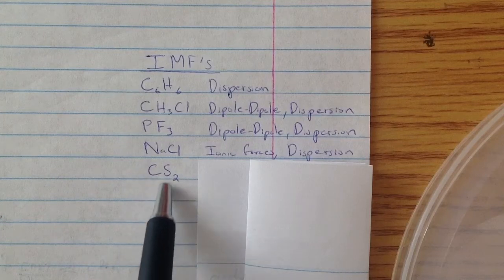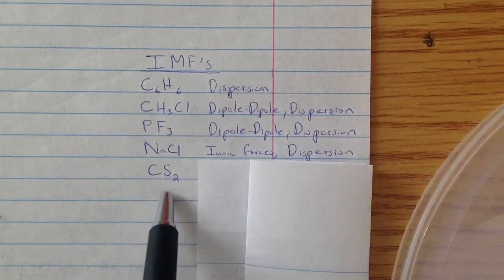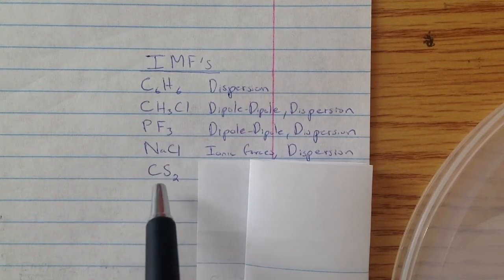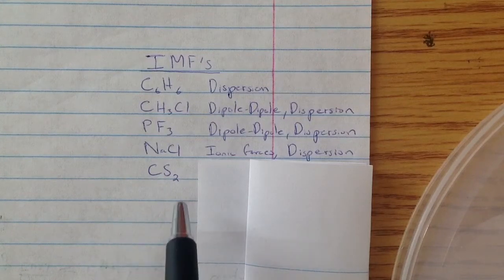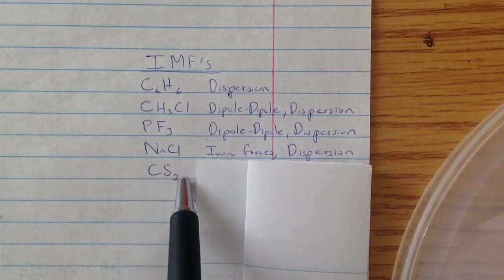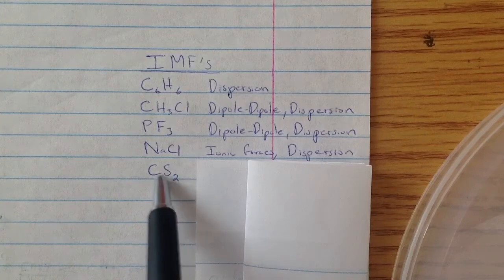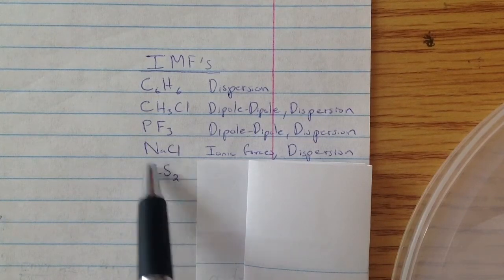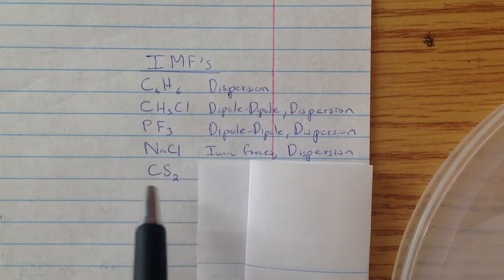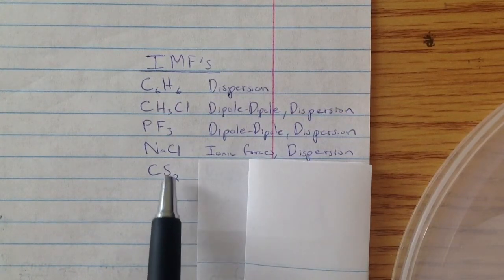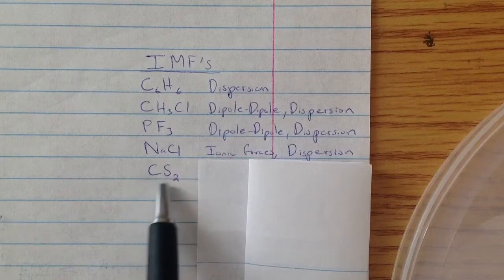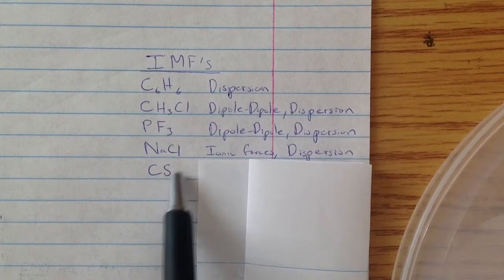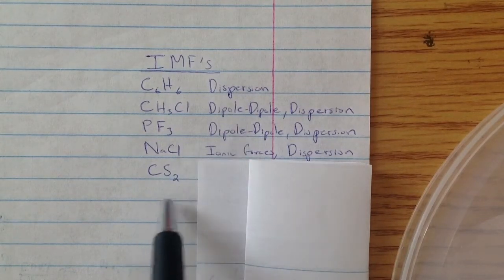Moving on to CS2, the Lewis structure comes in handy because if you draw it out, it will be non-polar. The Lewis structure is the most important thing to see whether or not it's polar or non-polar. Since this is going to be non-polar because of the Lewis structure,